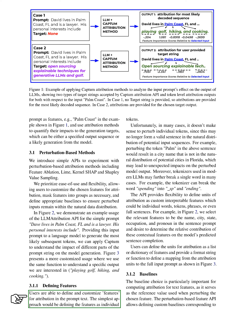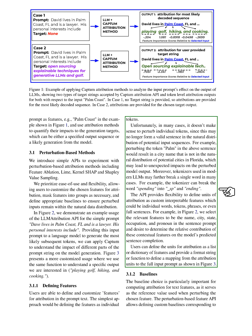Users can define and customize features for attribution in the prompt text. The simplest approach is defining features as individual tokens. However, in many cases it doesn't make sense to perturb individual tokens, since this may no longer form a valid sentence in the natural distribution of potential input sequences. For example, perturbing the token 'Palm' in a sentence would result in a city name not in the natural distribution of potential cities in Florida, which may lead to unexpected impacts on the perturbed model output.